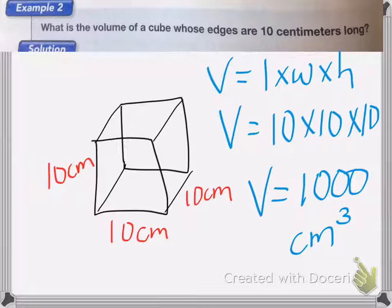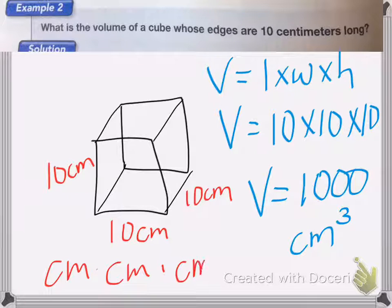When we deal with volume, you always need to label it centimeters cubed, because I'm multiplying centimeters times centimeters times centimeters. That's three of them. That's why we're cubing it.